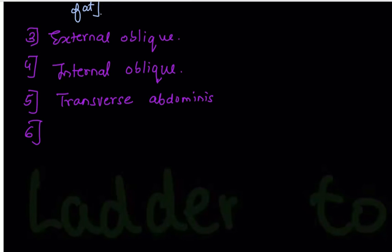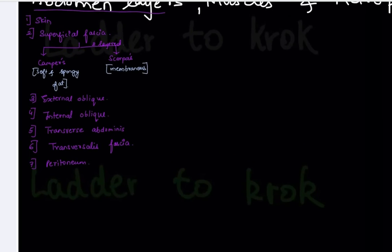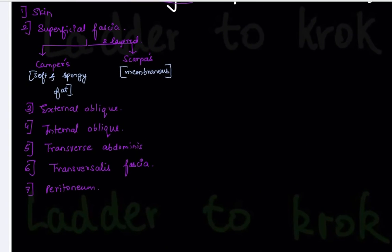The sixth layer is transversalis fascia. So two fascias have been covered — Camper's and Scarpa's — and that's all for fascia. The seventh and last layer is the peritoneum. In the next video we'll cover the peritoneum folds, the lesser omentum and greater omentum, in detail.